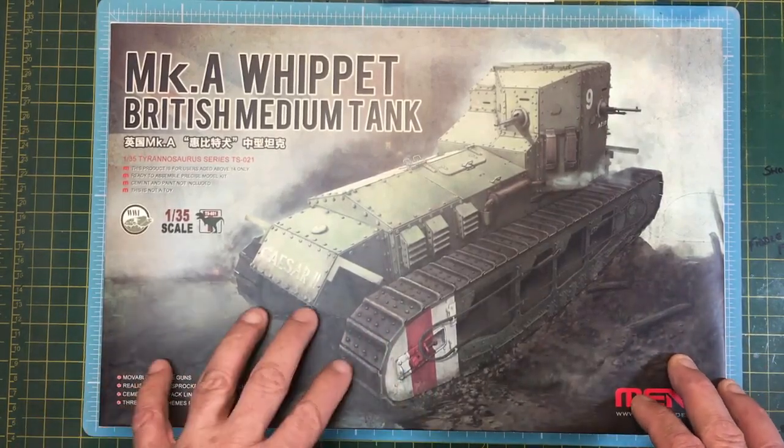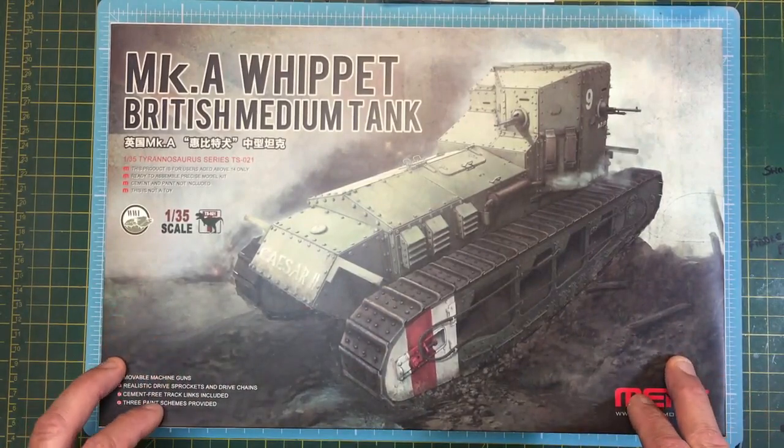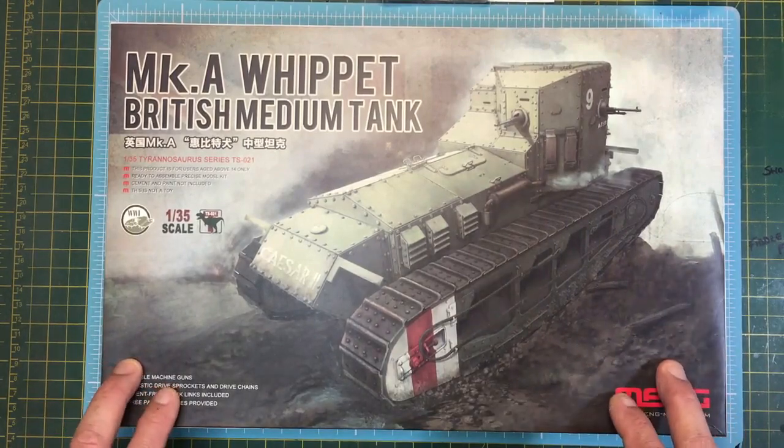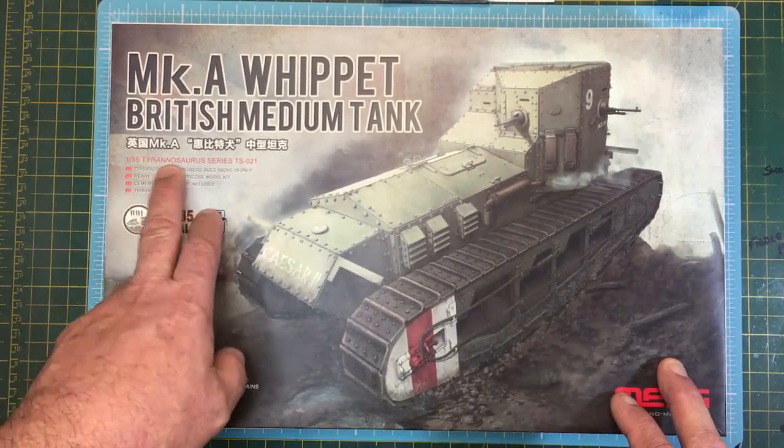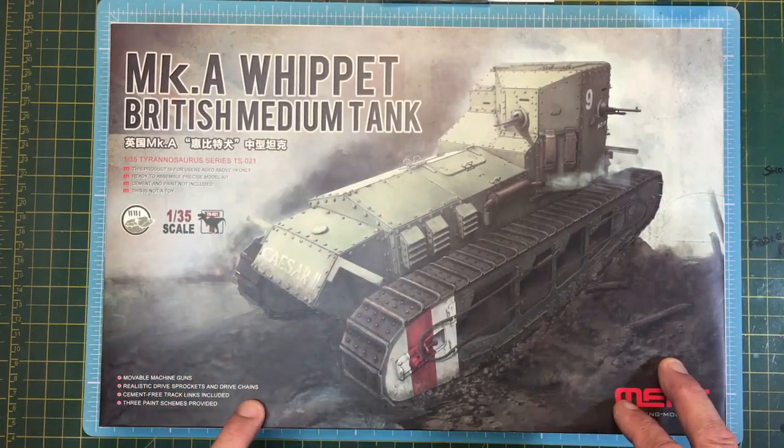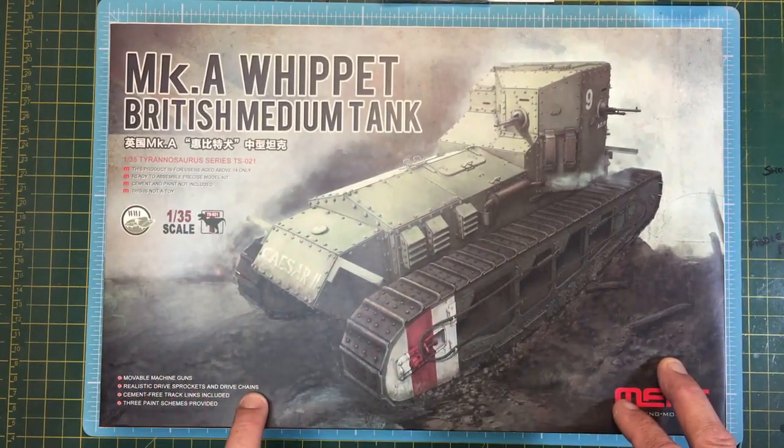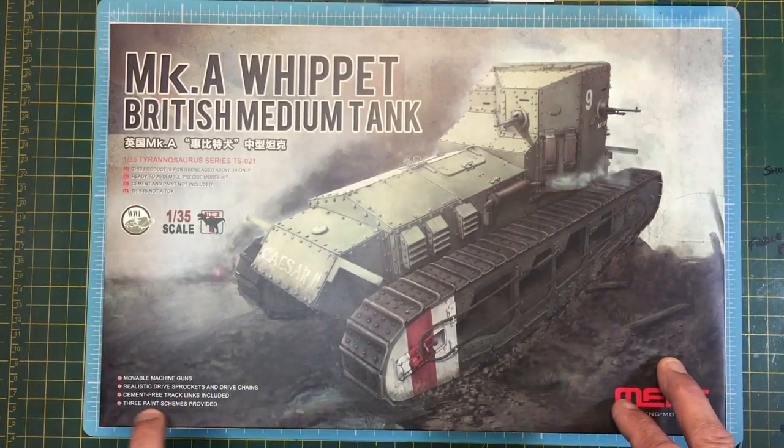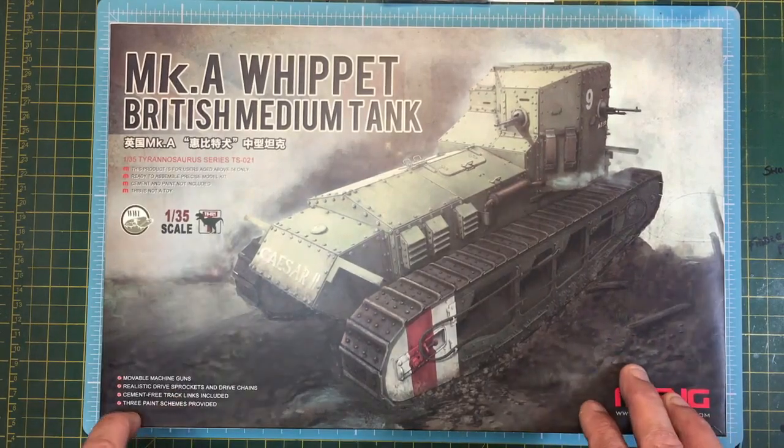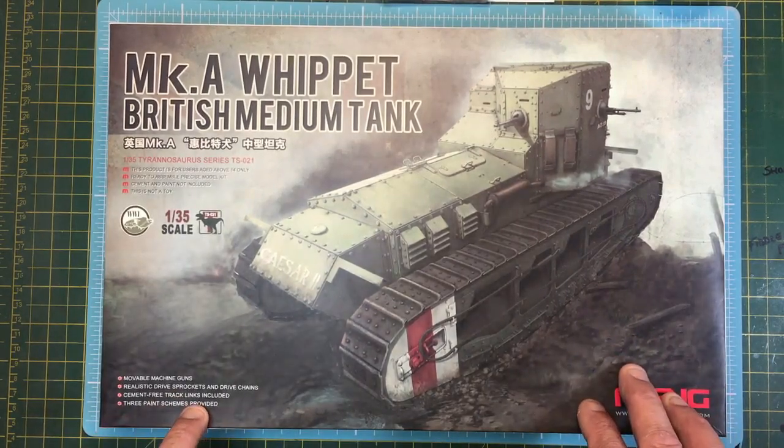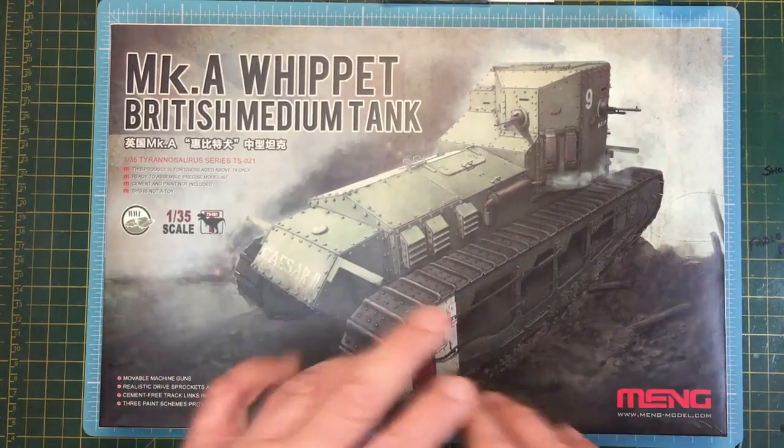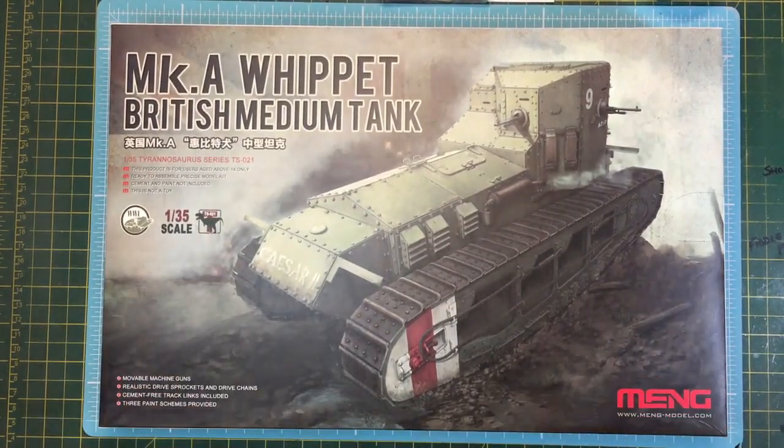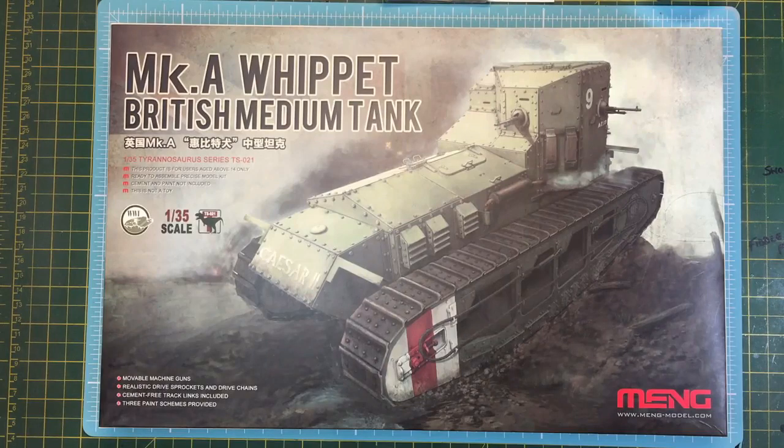This is the Mark A Whippet. If you want to see one of these in real life, there's a beautiful example down in Bovington. There's also some others around the world, there's one in Canada I think. This is Meng, the Tyrannosaurus series TS-021. It has movable machine guns, realistic drive sprockets and drive chains, cement-free track links included - yay, I like them - and three paint schemes provided.